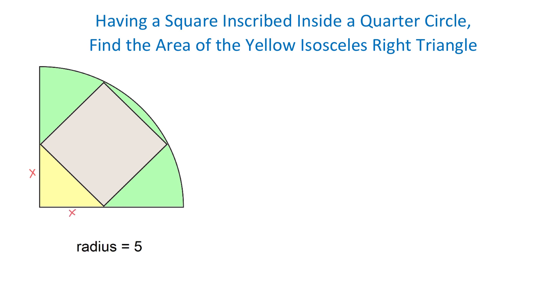To find x, first we will connect the center with this vertex of the square. Then from this vertex we will draw a perpendicular down. Now what we have here is a right triangle.